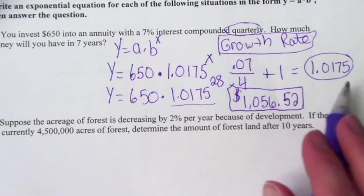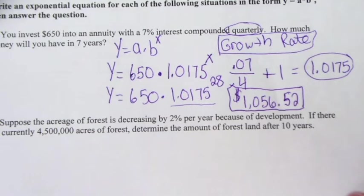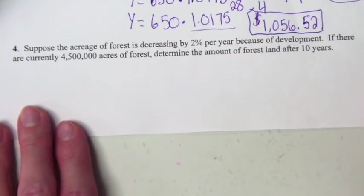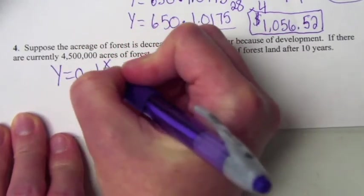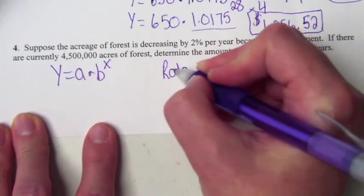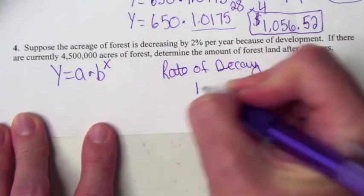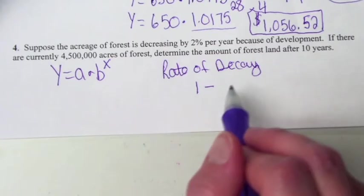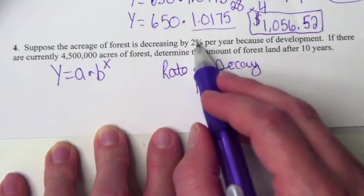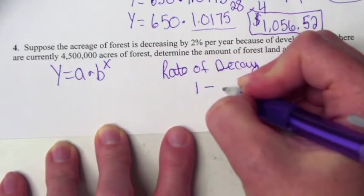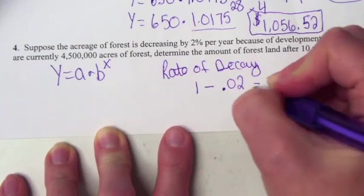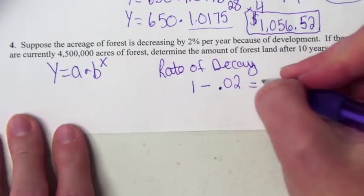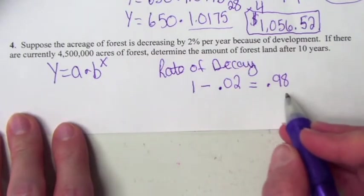Don't round that interest rate — keep as many decimals as they give you; only round to 3 or 4 if it fills up your calculator screen. The next problem is an exponential decay, so we need to find a decay factor instead of a growth rate. We still use y equals a times b to the x. To find the rate of decay, you take 1 minus the rate — instead of rate plus 1, it's 1 minus r. Two percent in decimal form is 0.02, so we take 1 minus 0.02, which is 0.98. That's our rate of decay.